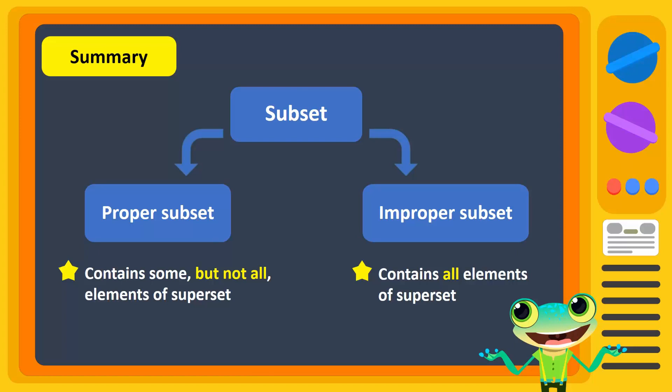In this video, we learnt about proper and improper subsets. Proper subsets contain some, but not all, the elements of the superset. Improper subsets contain all the elements of the superset.